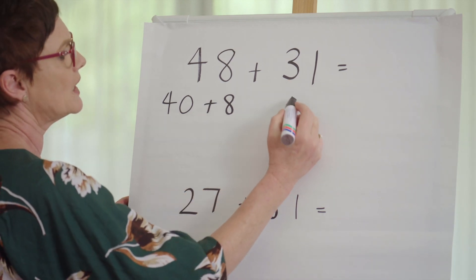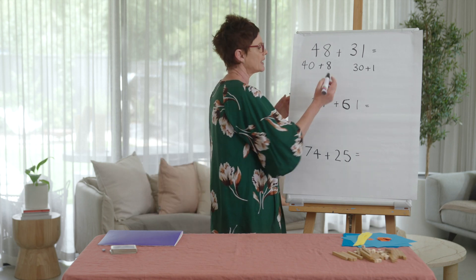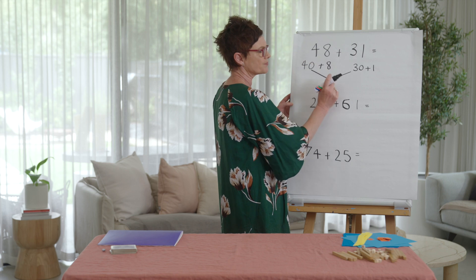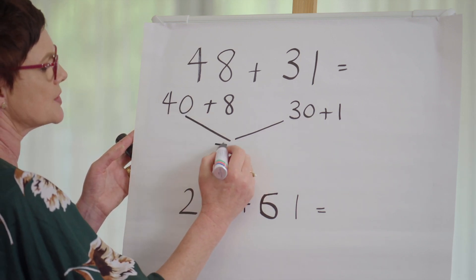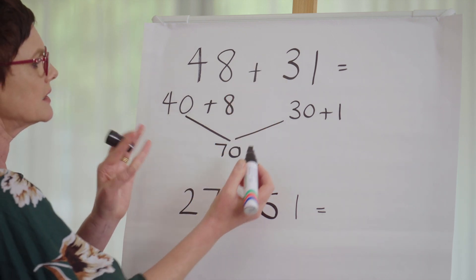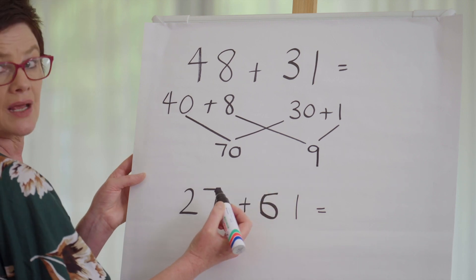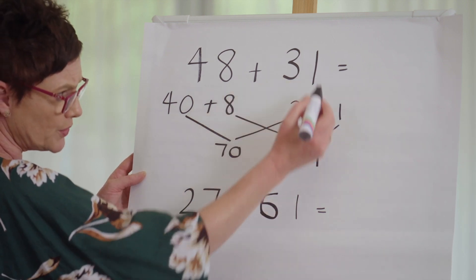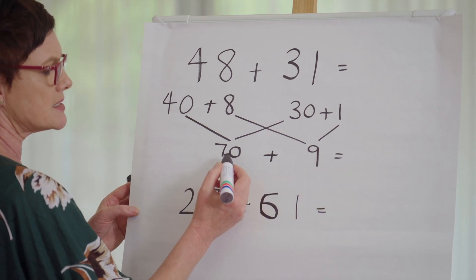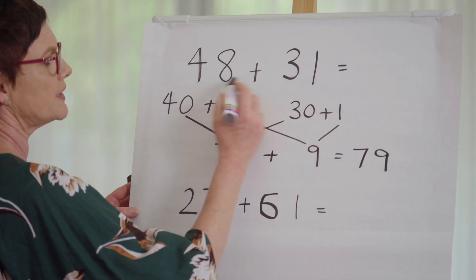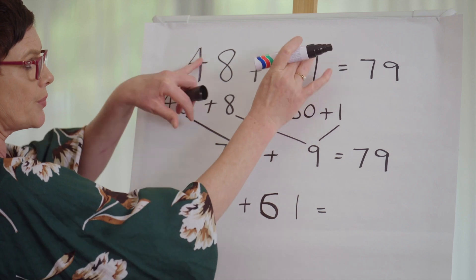We know that 48 is 40 plus 8. And 31 is 30 plus 1. So we've partitioned both numbers into tens and ones. Now I'm going to use a little bridge to bring these together. 30 and 40 make 70 — I bring my tens together. And 8 and 1 is 9 — I bring my ones together. So 70 plus 9 is 79. My answer is 79, and I've arrived there by partitioning both numbers and bringing the tens and ones together.